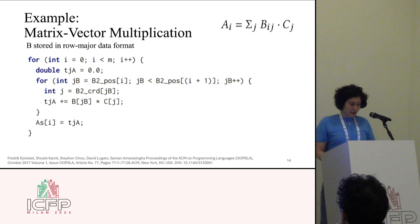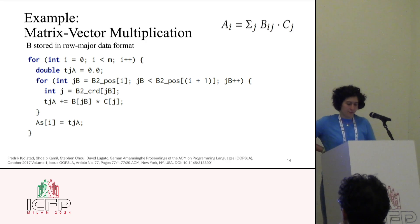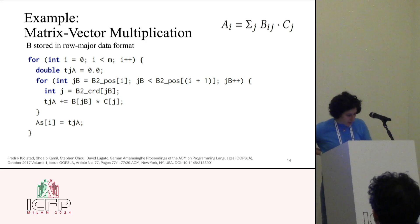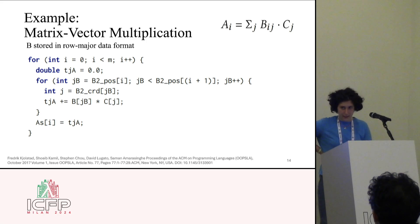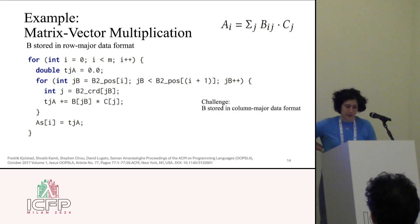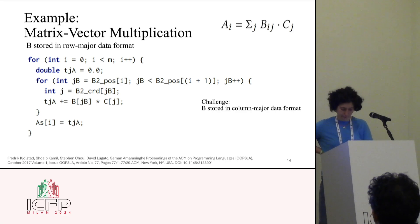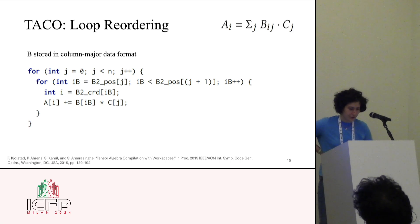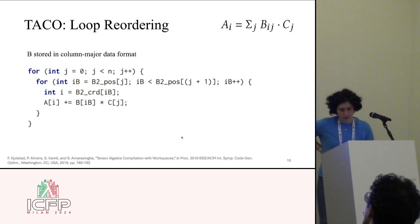For matrix-vector multiplication when both B and C are sparse, if B is stored in row-major order we first store rows and then columns, so we iterate over I's and then J's. But when stored in column-major format, we don't have direct access to I. So we need to introduce loop reordering as an optimization — as introduced by TACO — where we first iterate over J's and then over I's, which differs from the previous loop order.